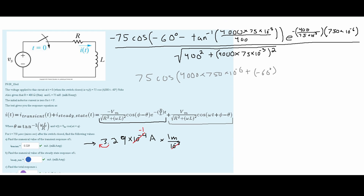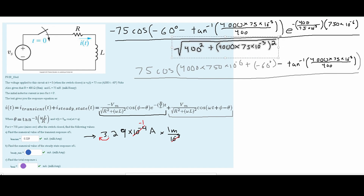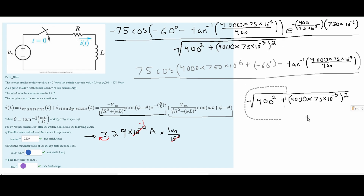We calculated theta previously, so we can copy it down. This value goes in the numerator with a closing parenthesis, and the denominator is the same square root of R squared plus omega times inductance squared — identical to what we computed before — so we copy that in as well.